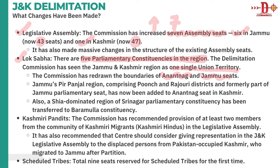The commission has also recommended that the centre should consider giving representation in J&K's legislative assembly to displaced persons from Pakistan-occupied Kashmir who migrated to Jammu after partition. Additionally, there are changes with respect to Scheduled Tribes — for the first time, a total of nine seats are reserved for the Scheduled Tribe.